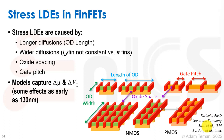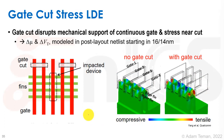This is something that's taken care of, but we have to go to layout to find out what these differences are, and back-annotate them into the models to see how they affect simulation. Gate cut stress is a new type of thing — we have these cut layers where we cut our gates, and the way the device acts will be different depending on how far the gate cut is from it. This disrupts the mechanical support of the continuous gate and creates stress near the cut, affecting mobility and VT. It's modeled in post-layout netlists starting at 16 or 14 nanometers.